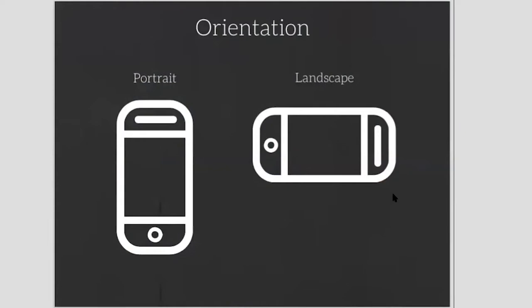The first thing to talk about is orientation — there's portrait and also landscape. You can see this with phones, but it's the same thing for a camera as well. Portrait is a little bit rectangular vertically, and landscape is horizontal. Think about your subject and how it relates to the orientation of your camera. I'm going to call everything a camera from here on out.